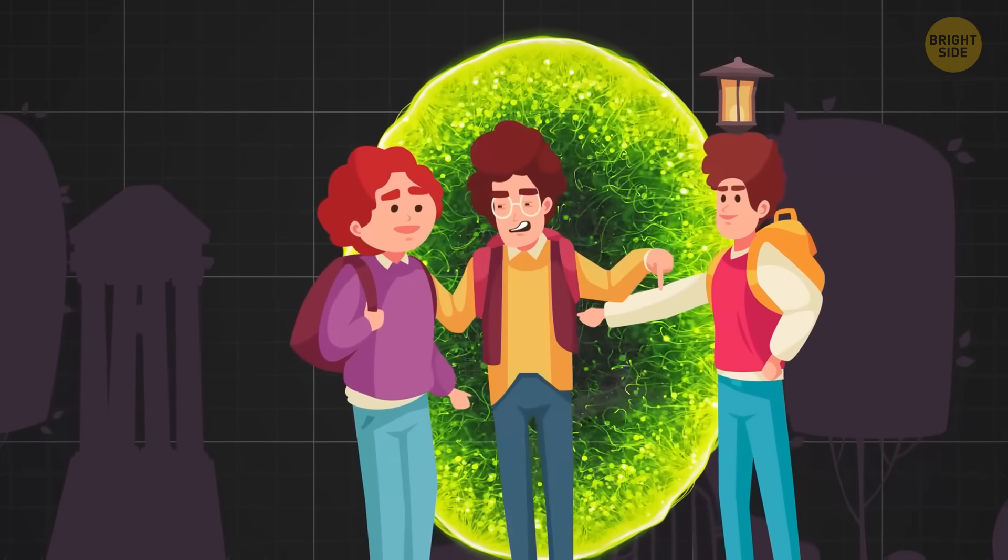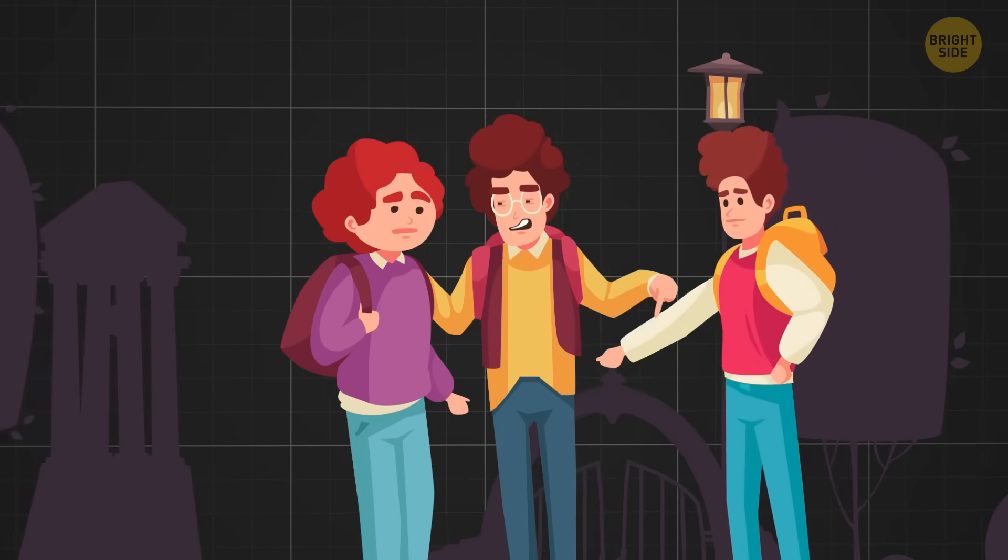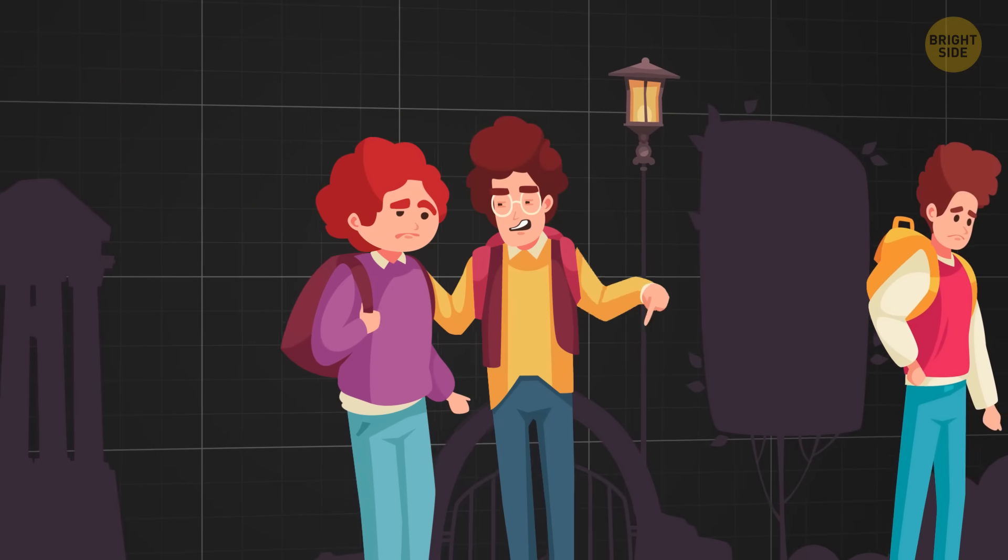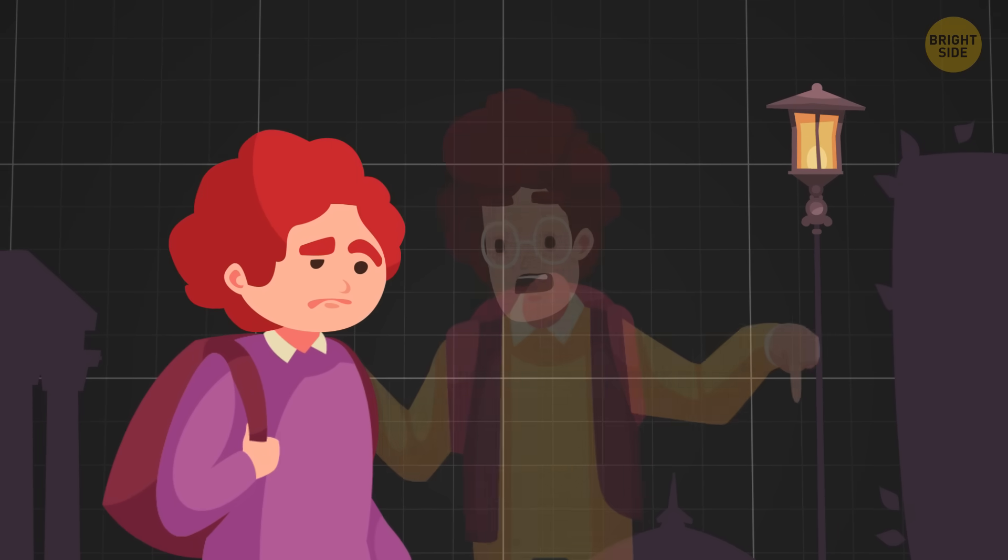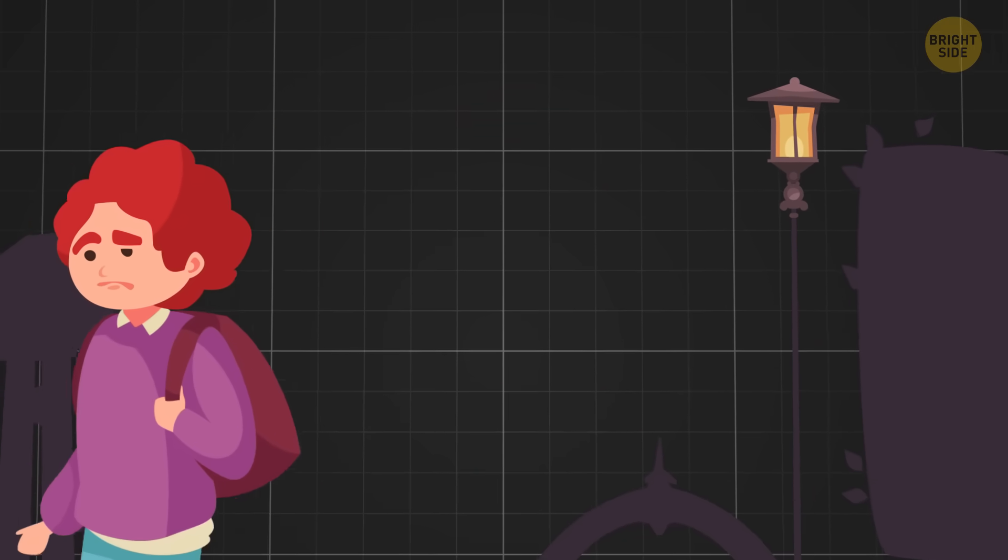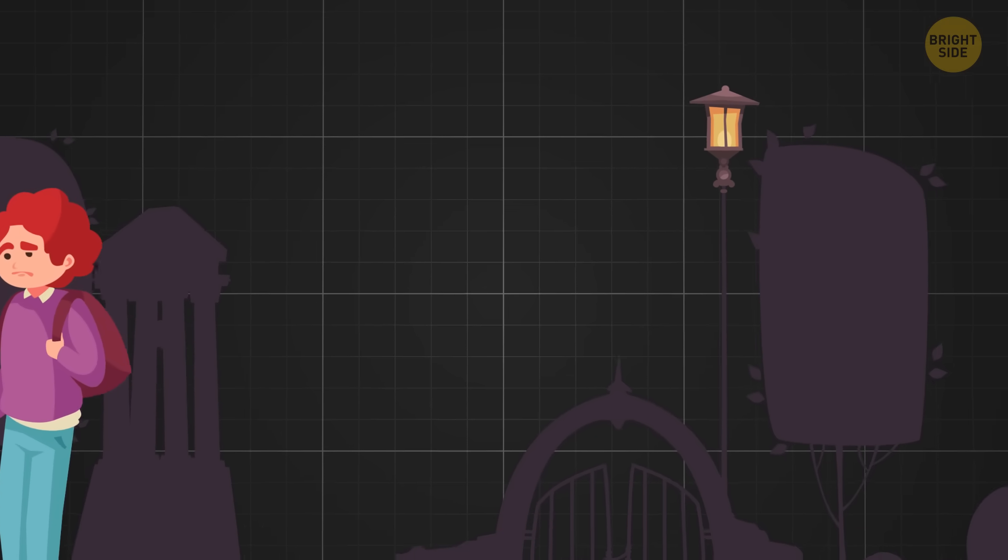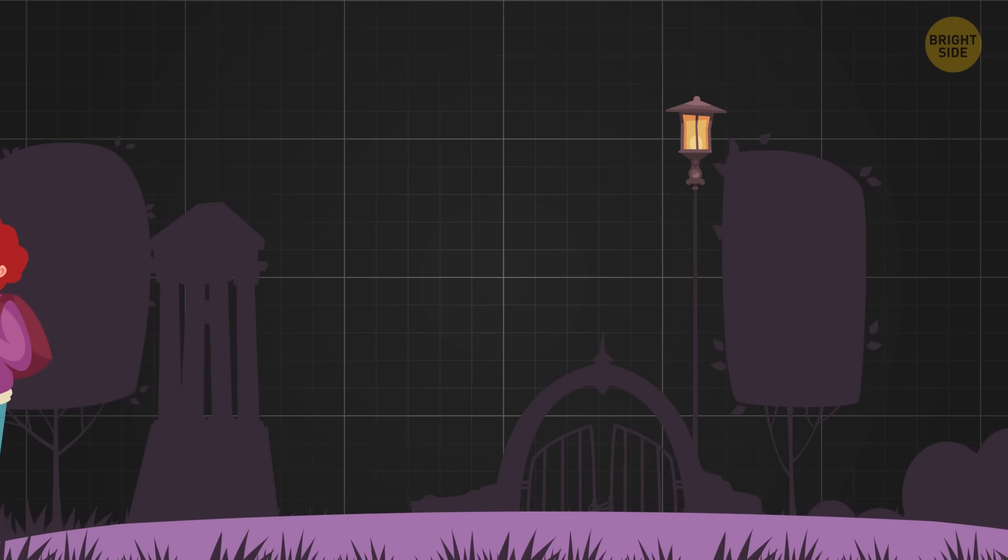Imagine that you travel back in time and prevent your grandparents from meeting. This alters the course of history. But how? If you erase their encounter, you cease to exist. So you couldn't even travel back in time to alter the past in the first place.